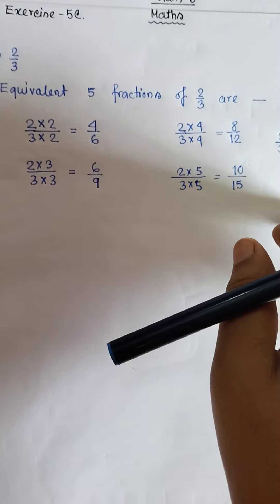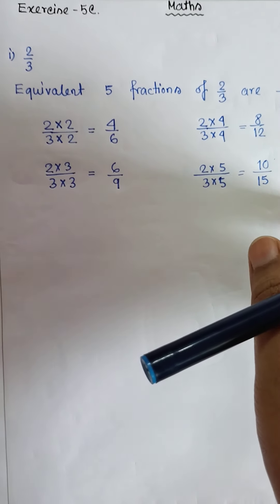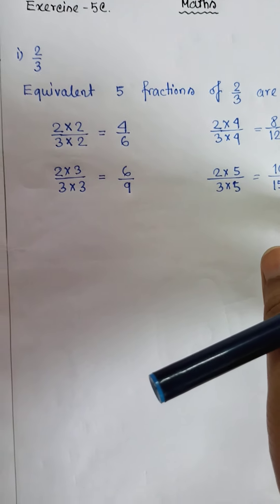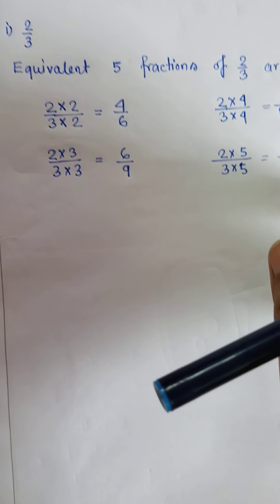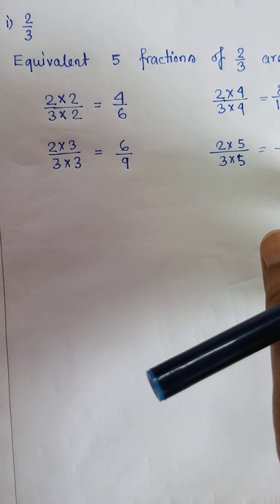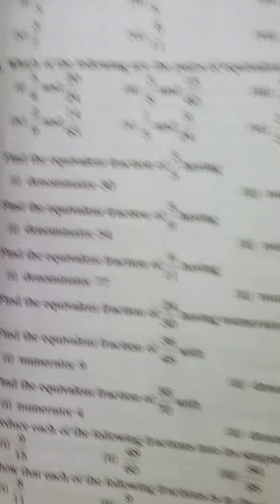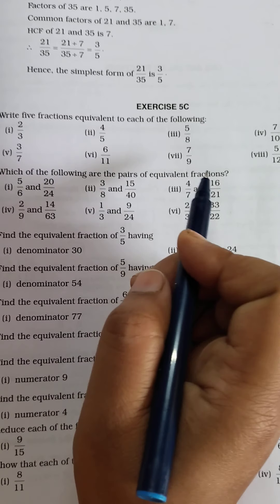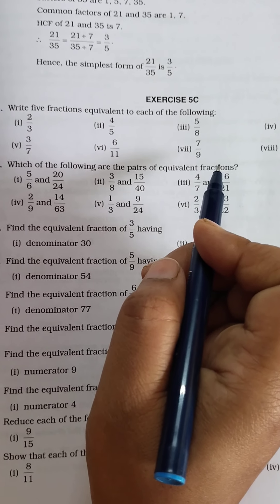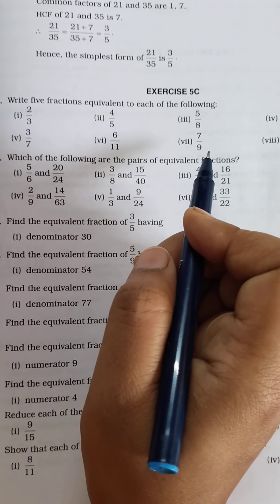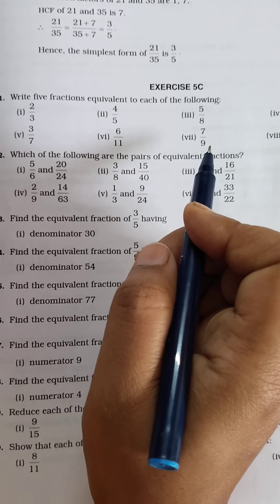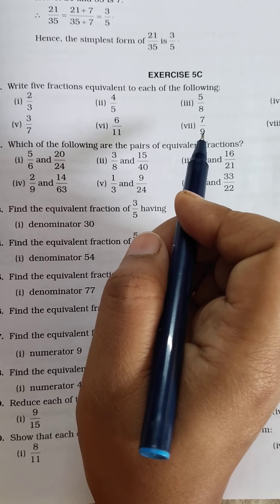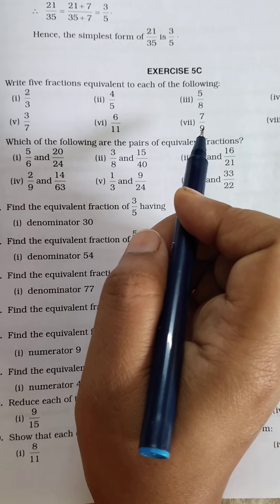So this is how we can get 5 equivalent fractions of a given fraction. Now coming to the next question: which of the following are pairs of equivalent fractions? So how will we check whether the given fractions are equivalent or not?